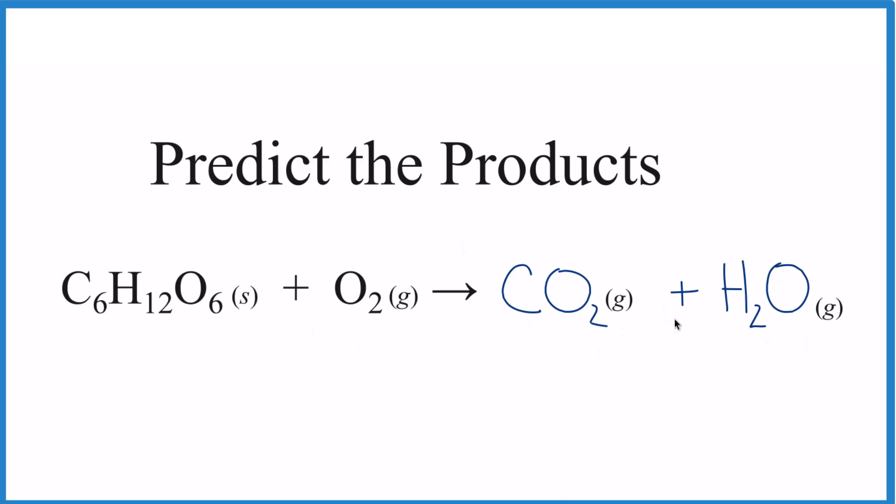This equation isn't balanced. If you need help with that, there's a link in the description to balancing the equation. But that's how you do it. Determine the type of reaction, and if you have organic combustion, then you're going to get carbon dioxide and water in the products.